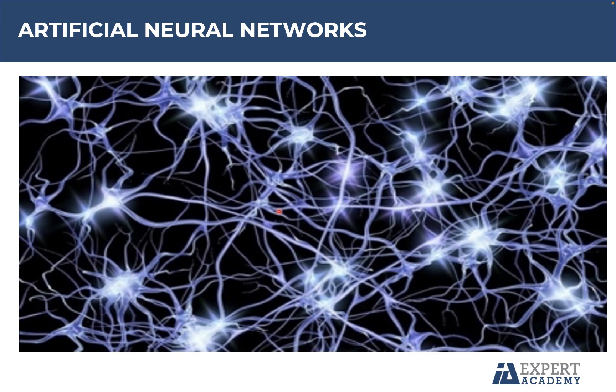Finally, based on this image, we can conclude that the neural network is composed of a set of interconnected neurons that exchange information.